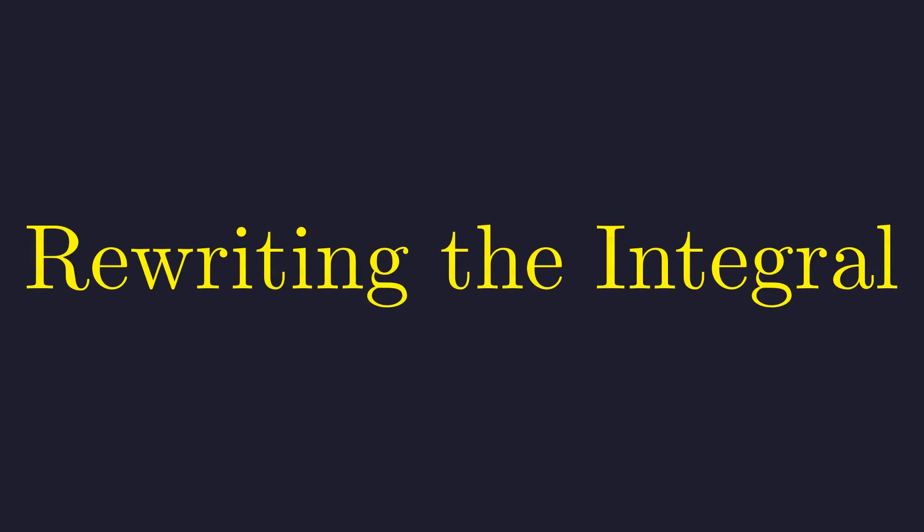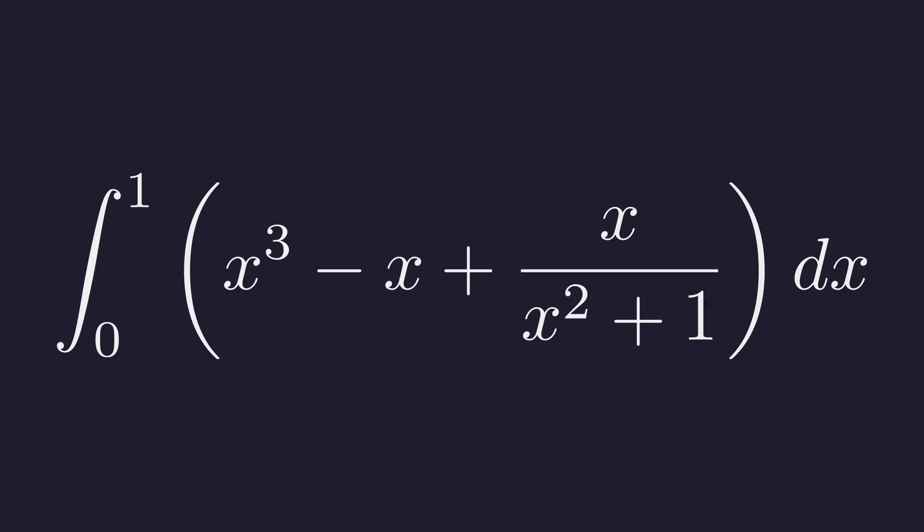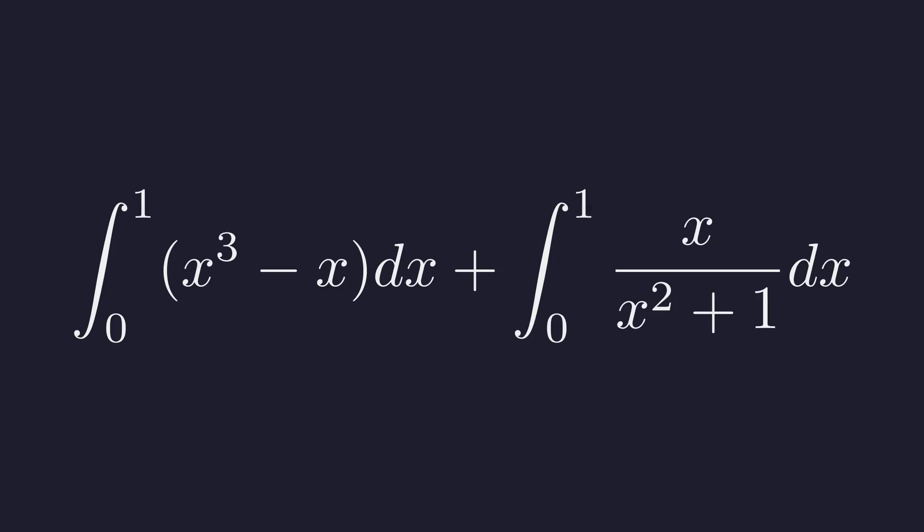We've expressed our original fraction as x cubed minus x plus a remainder term x over x squared plus 1. This is the key moment. We substitute this simplified expression back into our integral. What was once intimidating is now manageable. We can split this into separate pieces using the sum rule.